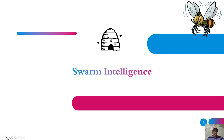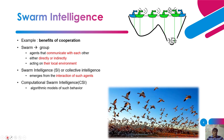First we'll start with swarm intelligence. What do you mean by swarm intelligence? Before getting to swarm intelligence, we will see what is a swarm. Swarm means a group. In a group, each and every individual will be called an agent. Those agents will communicate with each other either directly or indirectly, acting on their own local environment. The intelligence that emerges from the interaction of such agents is called swarm intelligence or collective intelligence.